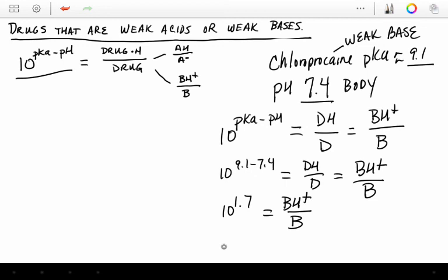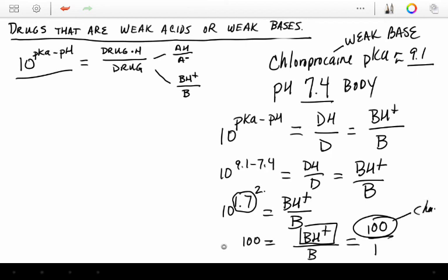And roughly, just for this example, we'll call this 10 to the 2. So we'll say 100 is equal to the number of charged drug molecules over the uncharged drug molecules. And chloroprocaine, when injected into the body, is going to be more unionized than it is ionized. You're going to have 100 molecules that will be charged and hard to pass membranes versus every one molecule that is uncharged.